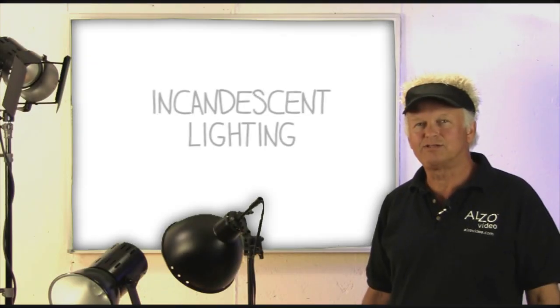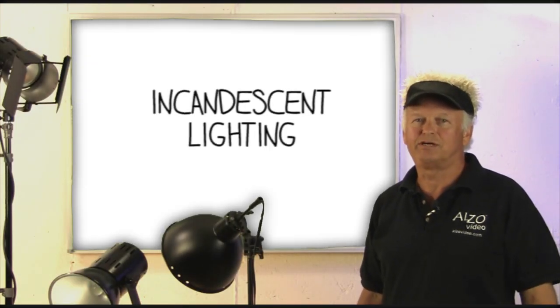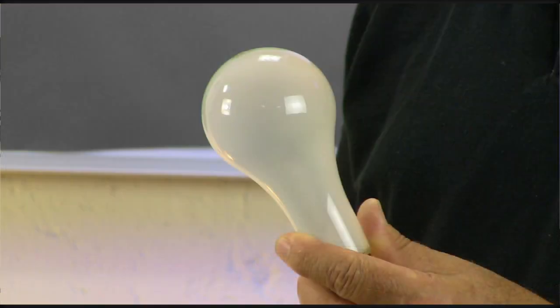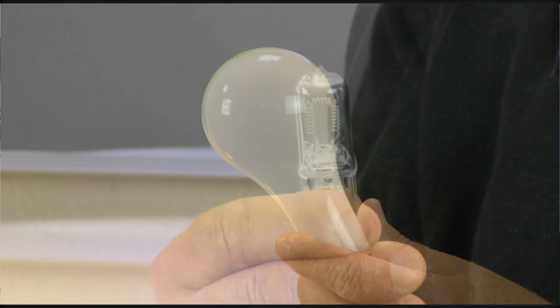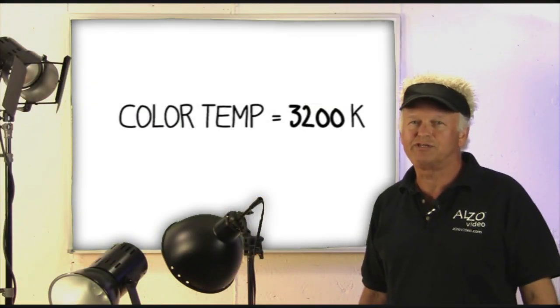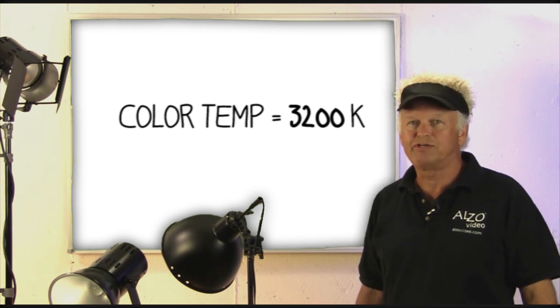Incandescent lighting has a long history dating back to the early 1800s. There are hundreds of shapes and sizes and models available, and some are specific to photography and video because they have a tight color temperature specification of 3200 degrees Kelvin.